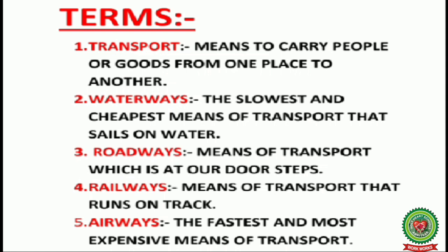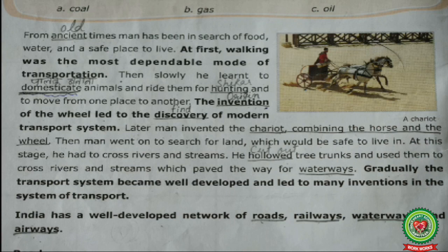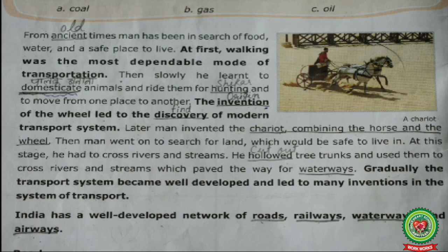Let's start reading from the book. First line: 'From ancient times, man has been in search of food, water and a safe place to live. At first, walking was the most dependable mode of transportation.' In the first line, underline 'ancient' and write 'old' there. In the fourth line, underline 'transportation' - its meaning is to carry people or goods from one place to another.